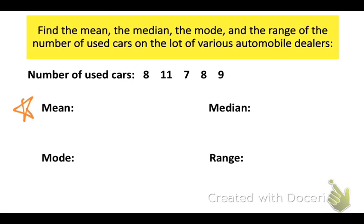And if we want to find, first of all, the mean number of used cars on the five different lots, here's what we would do. We would, first of all, add the five pieces of data together and then divide by five.